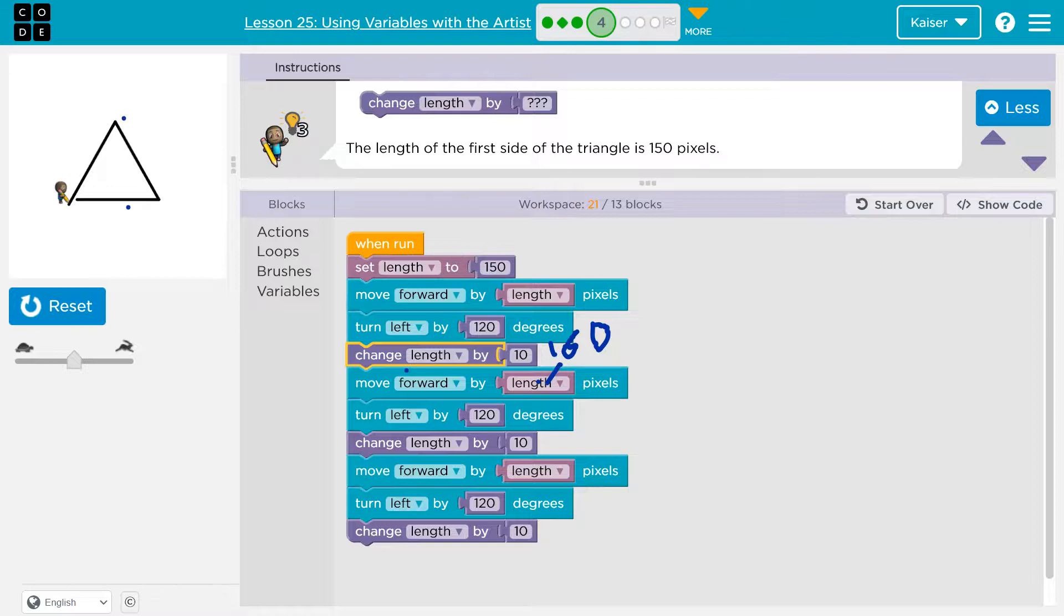And then it goes, okay, turn, and change length by 10. So now it says, what the heck was length? Oh, it's 160. So now it would be 170. And that's why this triangle isn't connecting. It's long. So again, we only set length once.